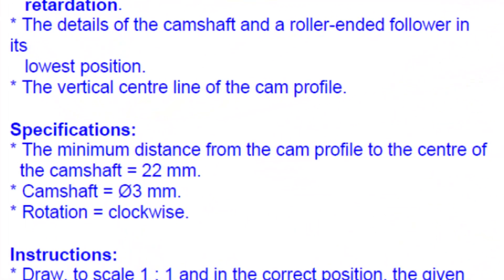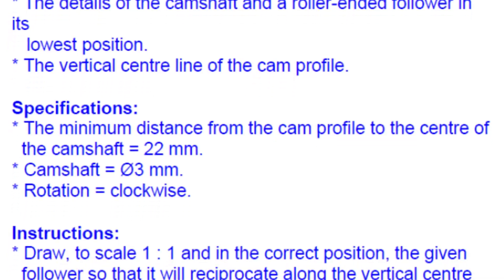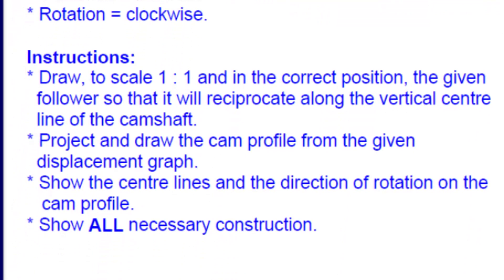Now let's look at the specifications. The minimum distance from the CAM profile to the center of the CAM shaft is 22 millimeters. The CAM shaft has a diameter of 3 millimeters, and the rotation will be in a clockwise direction. We need to draw to a scale of 1 to 1 and in the correct position the given follower, so that it will reciprocate along the vertical center line of the CAM shaft, meaning linear motion.